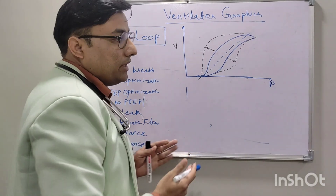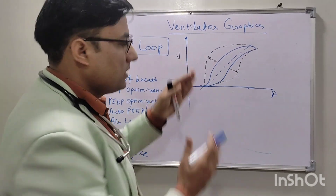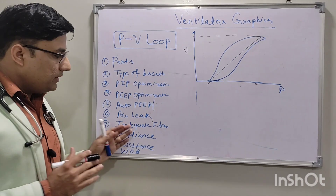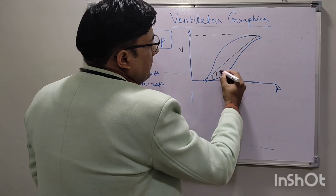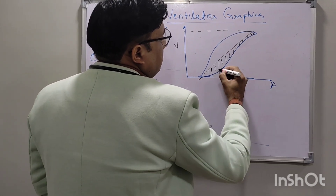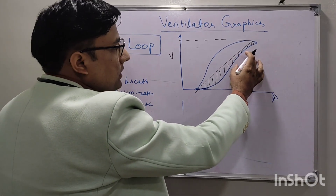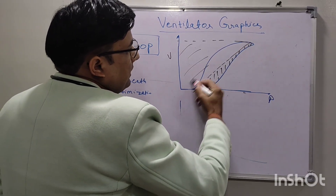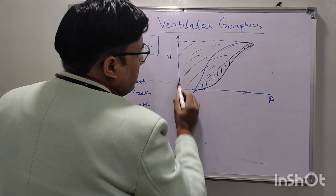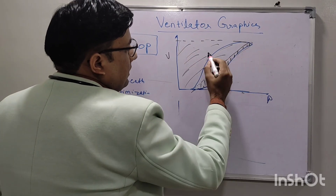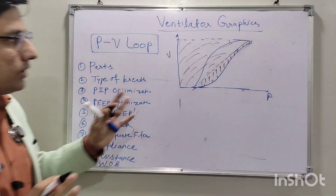We can also assess work of breathing. The area under the inspiratory curve tells about the resistive work of breathing during inspiration. During expiration, the area represents the elastic work of breathing. The total area under the complete PV loop curve represents the total work of breathing during the full respiratory cycle.